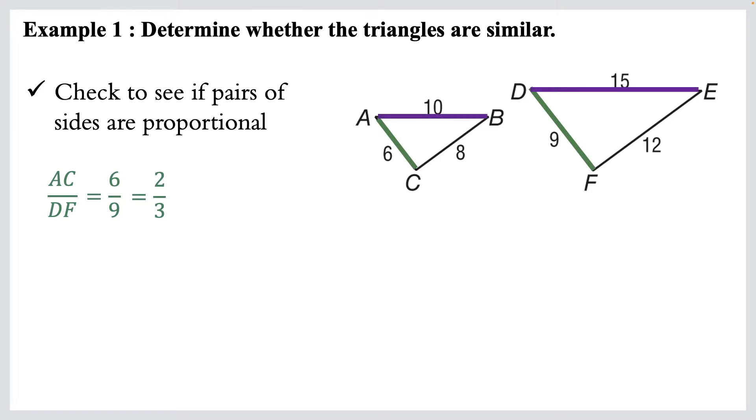Now we're going to do this next one. So ten partners with fifteen. So AB over DE, so let's compare those. That's ten over fifteen, and if we reduce that, we get two over three again.